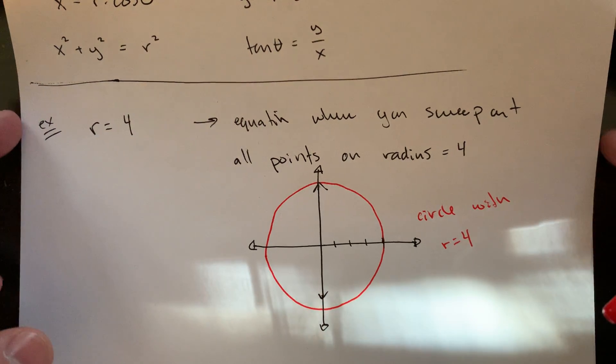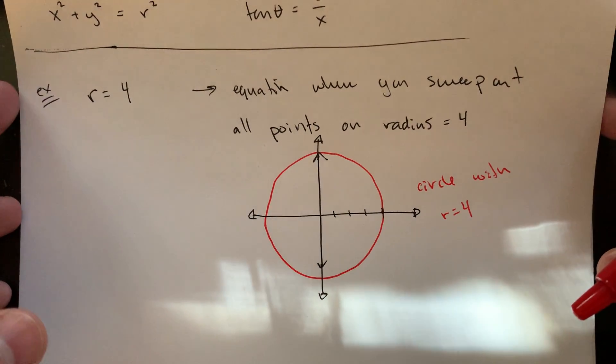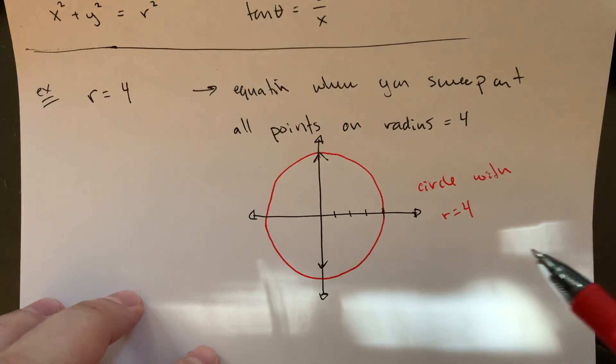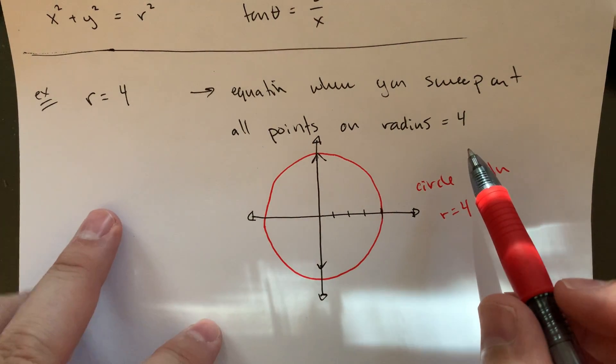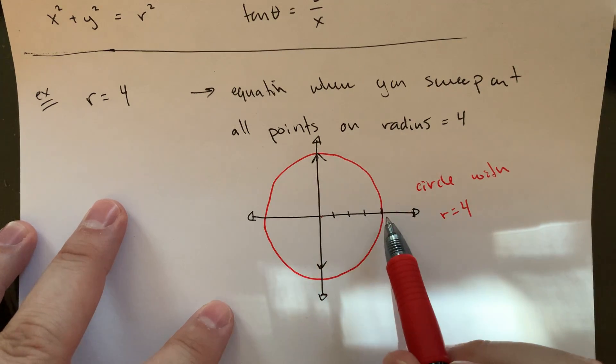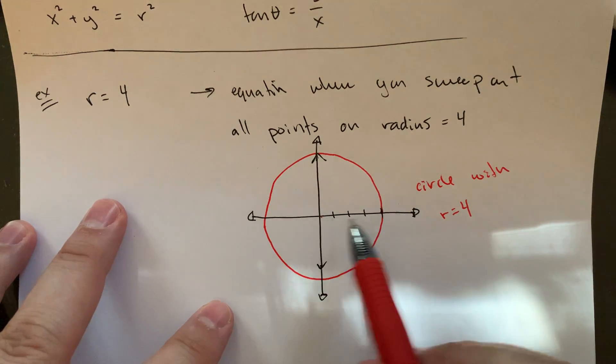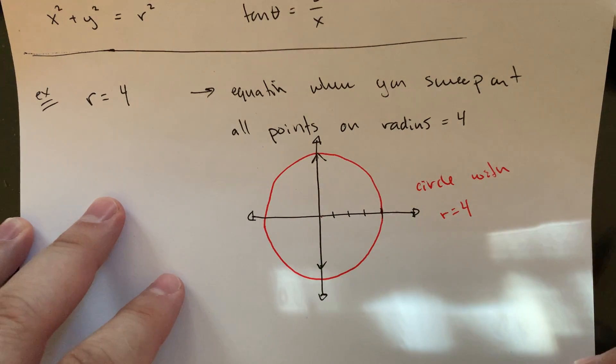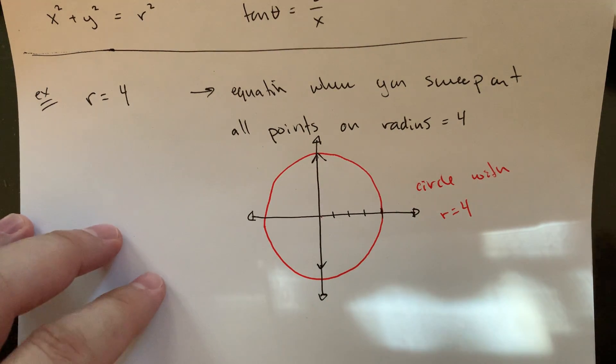That kind of by definition is just going to be the circle where your radius is four. I mean, it's all the points that are sort of four units away from the center. So that kind of by definition sweeps out for us a circle with radius four.